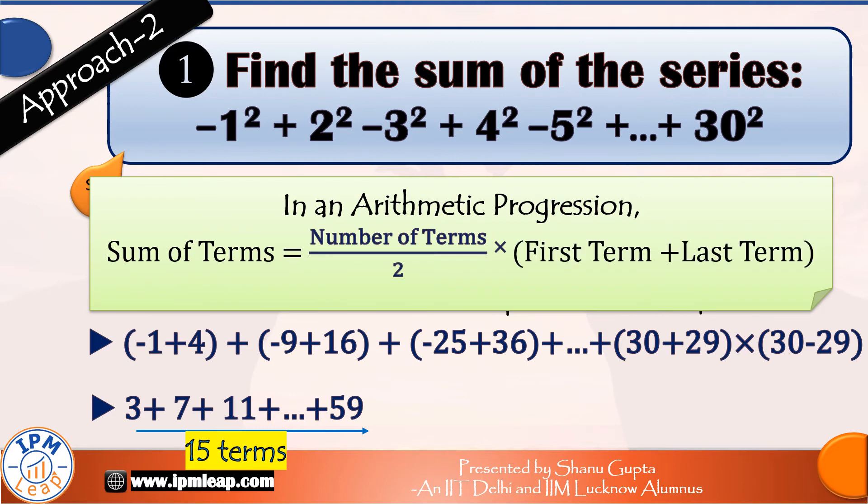In an AP, the sum of terms is equal to number of terms divided by 2 into first term plus last term. So first term is clearly 3, last term is 59, and the number of terms is 15 as we just discussed.